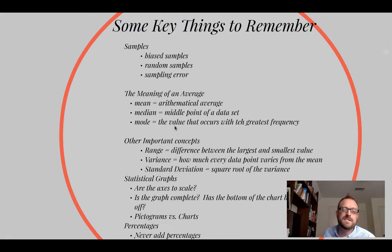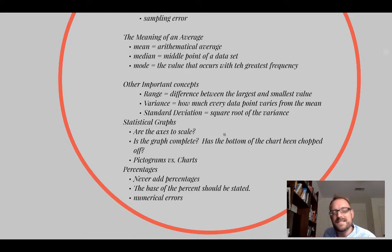Other important concepts, remember the range. Some of this comes from statistics. And so if you haven't studied statistics, you might want to watch a sort of follow-up video to this on basic statistics. But most people have seen this stuff. Range is the difference between the largest and the smallest value in the data set. The variance is how much every data point varies from the mean. And then the standard deviation, which is frequently given when statistics are presented, or published. And the standard deviation tells you how far away from the mean are these values. And the standard deviation ultimately is determined by the square root of the variance.